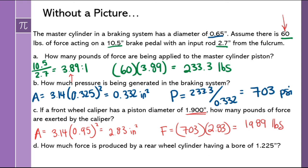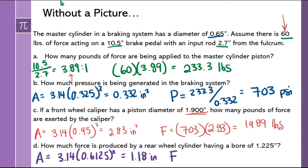For the output force at the front brakes: the caliper piston has a diameter giving a radius of 0.95, so area equals 2.83 square inches. Force equals 703 times 2.83, giving about 1,989 pounds. At the rear, the cylinder diameter gives a radius of 0.6125, area approximately 1.18 inches squared. Rear output force equals system pressure 703 multiplied by 1.18, giving about 830 pounds. That's how you take force equals pressure times area and solve an entire braking system.